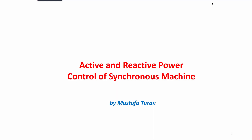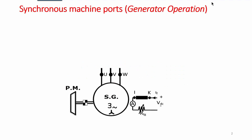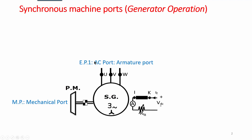Active and Reactive Power Control of Synchronous Machine. Let's define the machine ports first. There are three ports in a synchronous machine. One is the mechanical port, which is the shaft. The other is the electrical port — the AC port belonging to the armature or stator coils — and the DC port, also known as the excitation port.